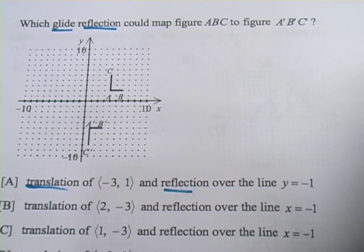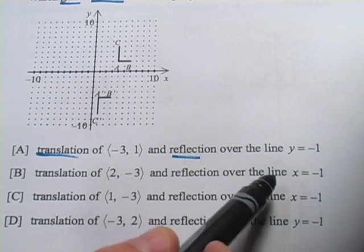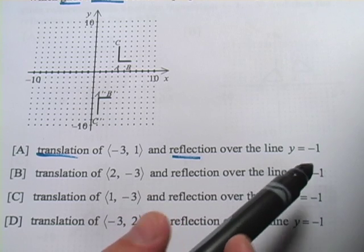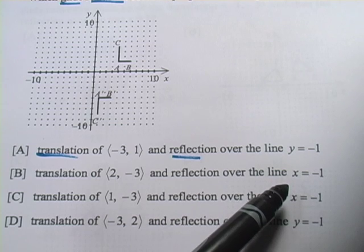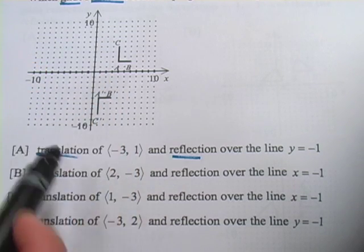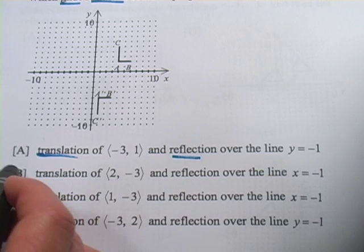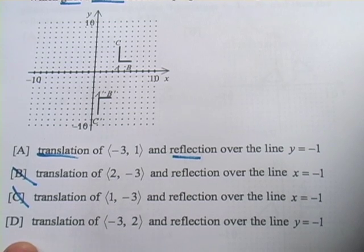That's the first part. And actually, just looking ahead to the answer choices here, we've got reflections either over the line y equals negative one or x equals negative one. Well, you should know that the line x equals negative one would be a vertical line straight up and down here. So that's not going to work, and I can just eliminate b and c already. So that's helpful.